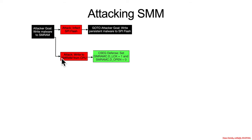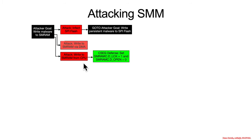Now let's say the attacker is running on the CPU and wants to infect the SMRAM directly. The first defense against that is the CSEG defense: SMRAM-C delock is 1 and SMRAM-C deopen is 0, which stops an attacker on the CPU from writing into that SMRAM range. However, because SMRAM is ultimately just DRAM behind the scenes, if an attacker can write to that physical address they can successfully infect it — for example, via DMA (direct memory access) through a peripheral that has DMA access to RAM.